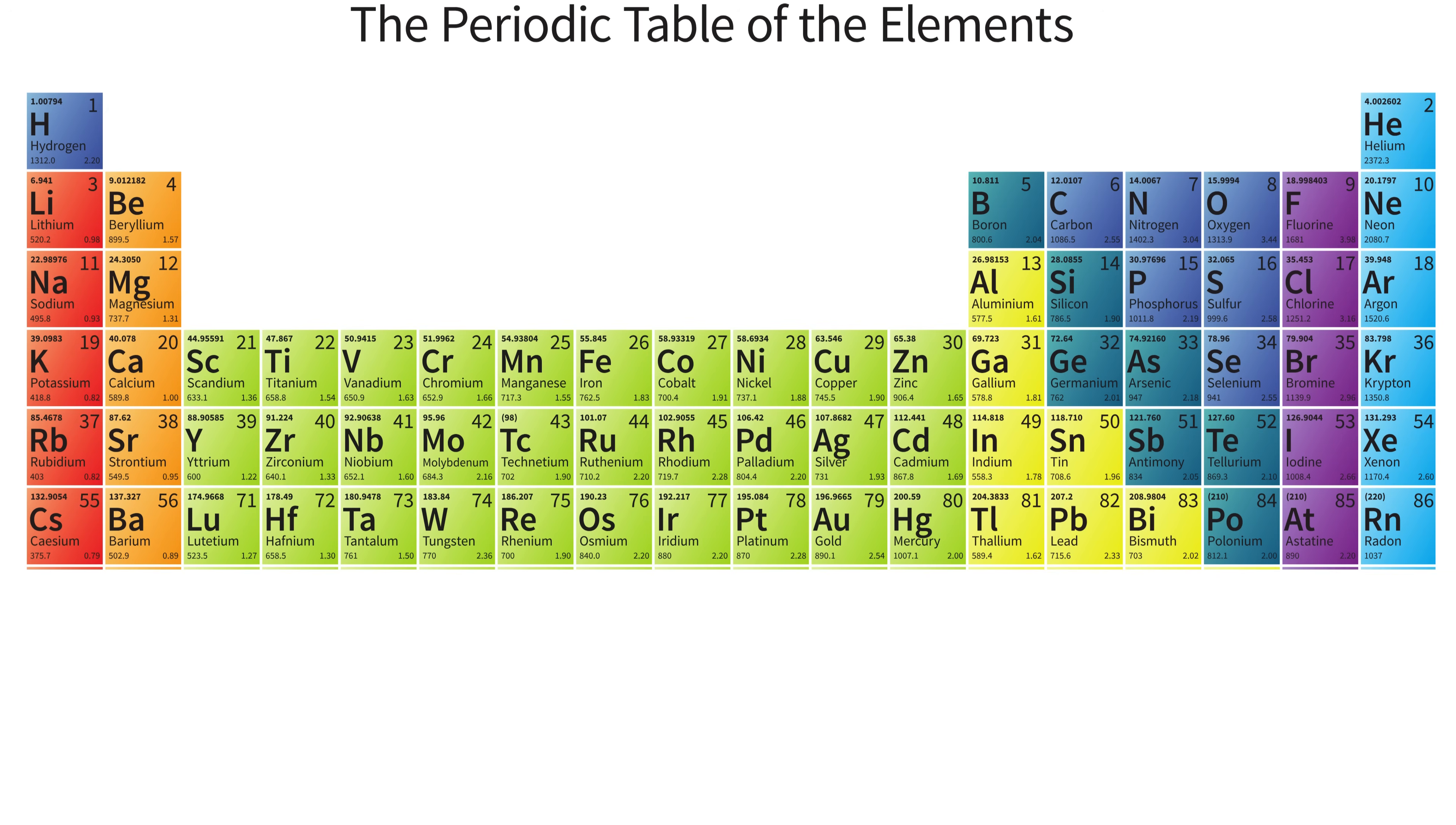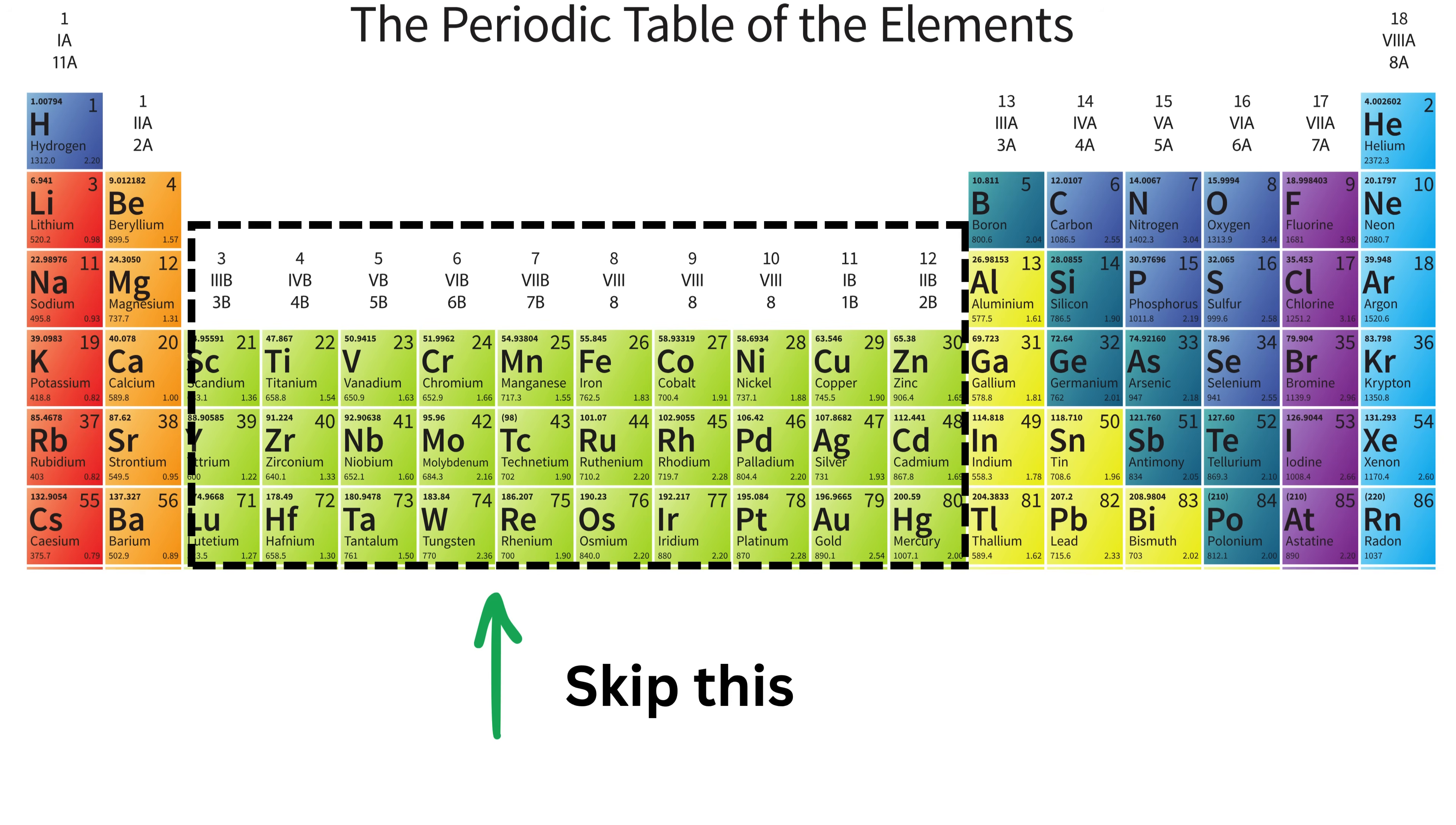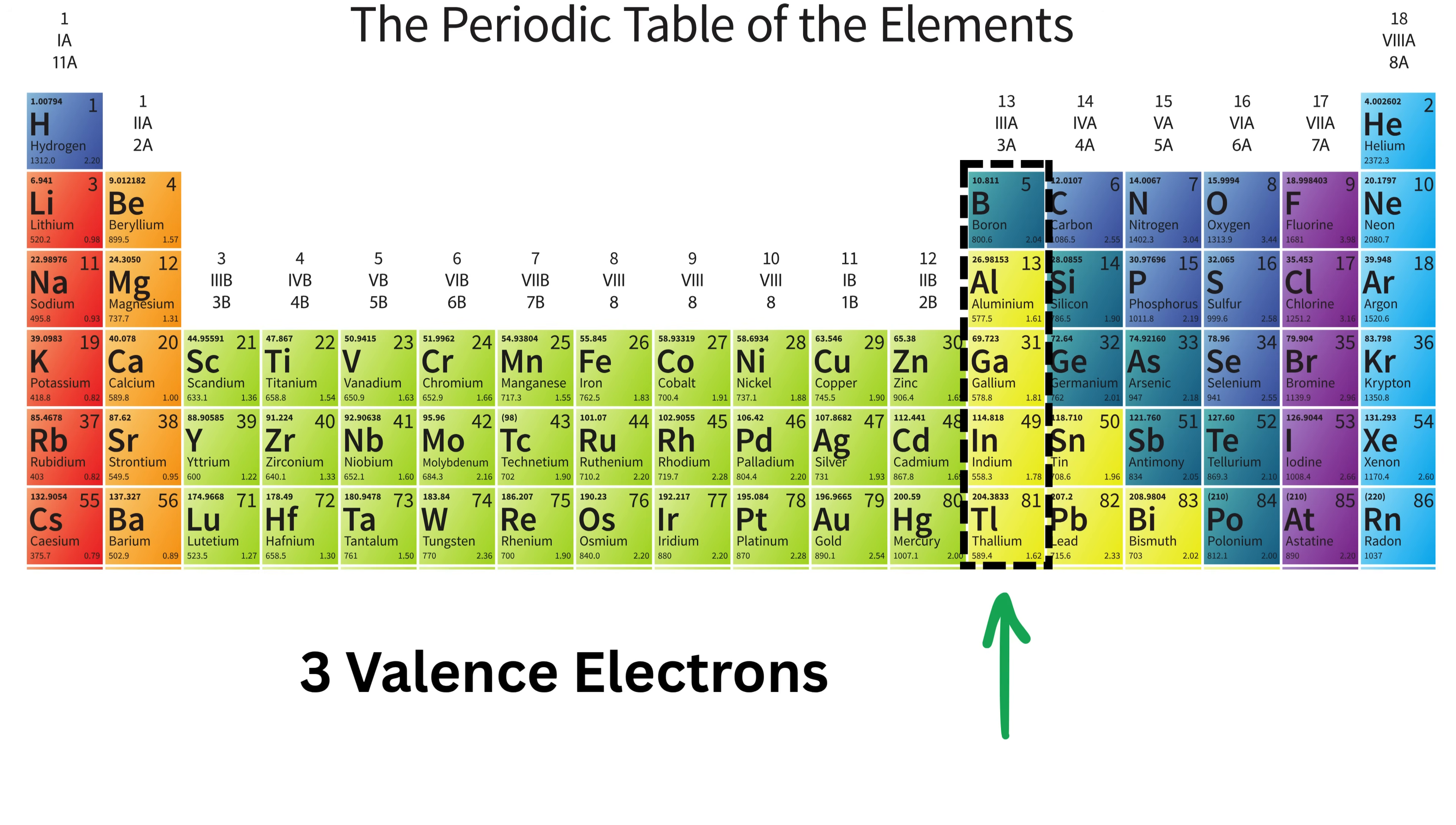Now, the number of valence electrons an atom has can be found directly from the periodic table. If you look at the table, elements are arranged in columns called groups. Every group tells us how many valence electrons the atoms in that column have. For example, all elements in the first column, like hydrogen, lithium, sodium, have one valence electron. Those in the second column, like beryllium and magnesium, have two valence electrons. Then you skip the big block of metals in the middle, called transition metals, and continue counting: group three has three, group four has four, and so on, all the way up to group eight, which has eight valence electrons.